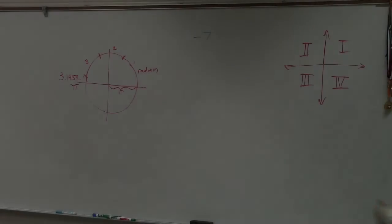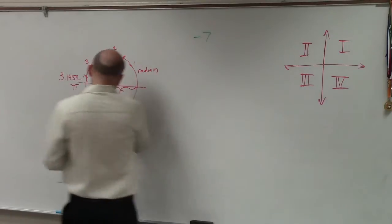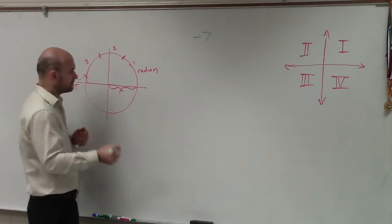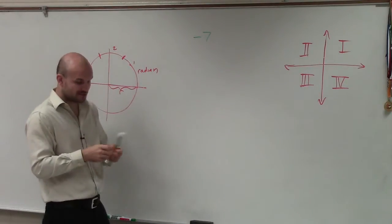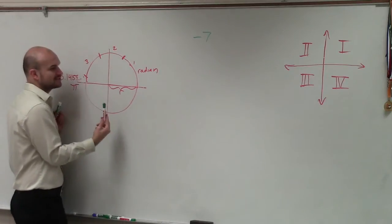What would negative 7 be? So ladies and gentlemen, again, what we talked about, when we're graphing an angle, we have an initial side and a terminal side.